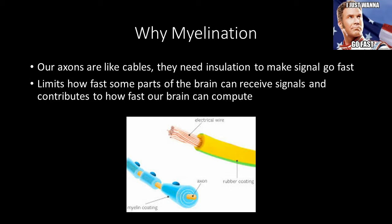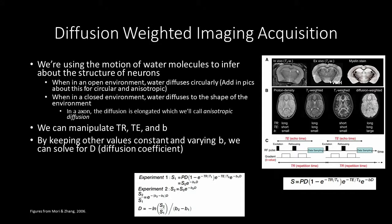Think of axons as cables. The cables need insulation — which is the myelin on neurons — to make the electricity that travels along them go faster. Cables transmit information from one thing to another, just like axons do. We can obtain information about axons in the human brain through diffusion-weighted imaging using an MRI. Basically, we use the diffusion of water molecules to infer the structure of neurons, in this case specifically axons.